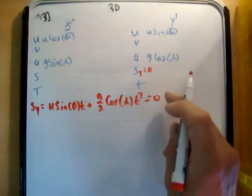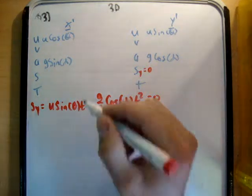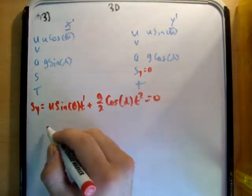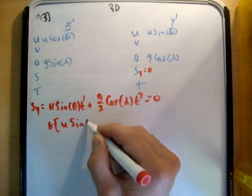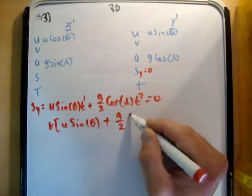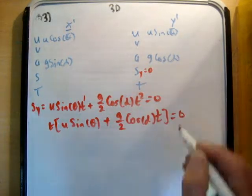So this is a quadratic. It's a polynomial of degree 2. However, we do not have a t to the 0 term, so we can just pull out t. It's the easiest way to solve this. So we get u sine theta plus g over 2 cos alpha t is equal to 0.